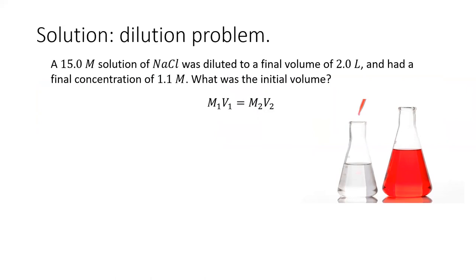Here is the solution. We need to search in the problem for M1, V1, M2, and V2, one of which won't be given, and that is the unknown we will solve for.